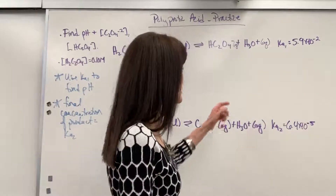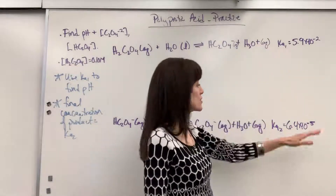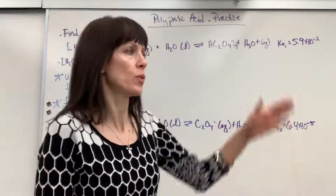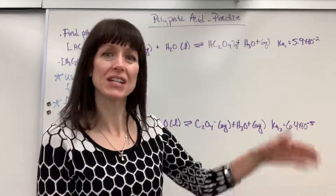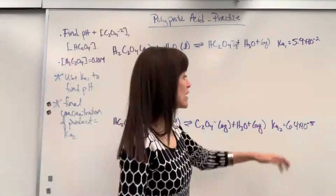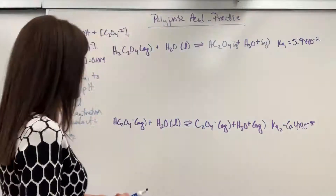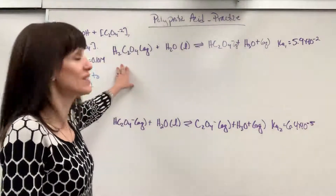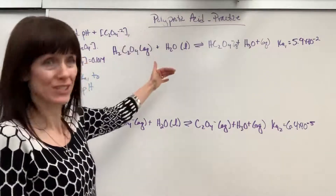I want to point something out. Notice that Ka1 is significantly larger than Ka2. That will always be true of polyprotic acids — with each successive deprotonation, each successive loss of hydrogen, the Ka value is smaller. It's going to be even more reactant-favored.